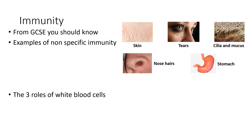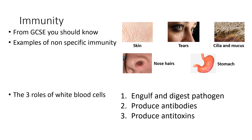We also have the nose, which is a physical barrier, and hydrochloric acid inside the stomach which can digest pathogens. In terms of the three main roles of white blood cells, you may have been familiar with the terms phagocyte and lymphocyte at GCSE. The three main roles are: engulfing and digesting pathogens, producing antibodies, and producing antitoxins.